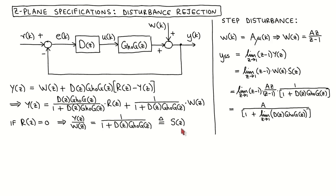Another way to analyze the effect of the disturbance is to calculate the steady-state output in response to a specific disturbance signal. For a step disturbance of size A, the Z-transform of the disturbance signal is Az divided by Z minus 1. Using the final value theorem, the steady-state value of the output is the limit as Z tends to 1 of Z minus 1 times the Z-transform of the output, which equals the disturbance signal times the sensitivity function. Substituting and applying the limit gives the steady-state output as A divided by 1 plus the limit as Z tends to 1 of the loop transfer function.